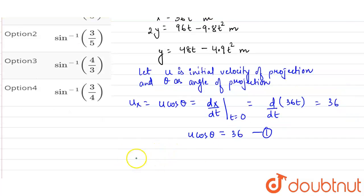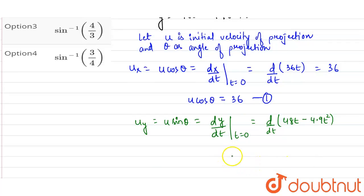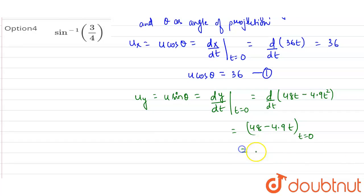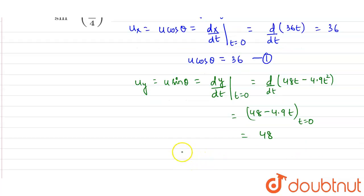Similarly, find the vertical component. uy will be u sin θ, and it will be given by dy by dt at time equals 0. So it will be d by dt of 48t minus 4.9t squared, which comes out as 48 minus 4.9t. At t equals 0, it will be 48. So u sin θ equals 48. Let this be equation number 2.